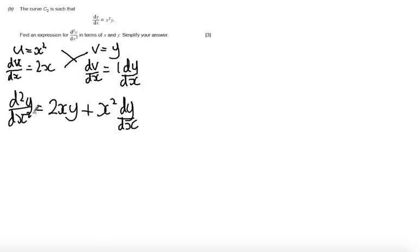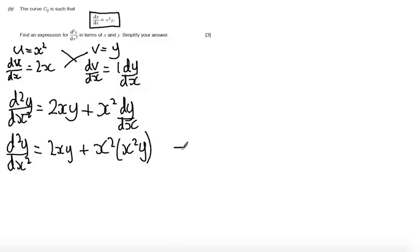Now I don't actually want to have a second derivative here in terms of dy/dx, so what I'm now going to do is substitute dy/dx for this initial definition of dy/dx. So we're going to say, okay, well d²y/dx² is equal to 2xy plus x² times x²y. And so this will tidy up and give us d²y/dx² is equal to 2xy + x⁴y. Okay then.